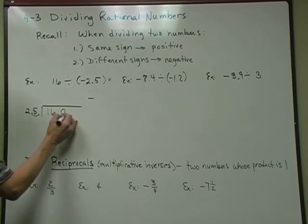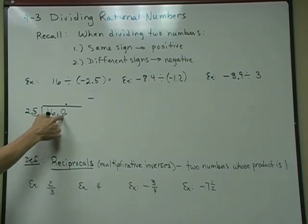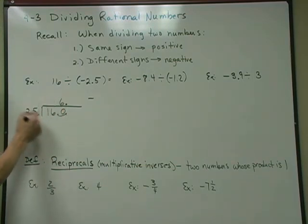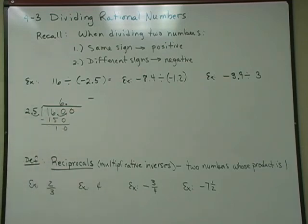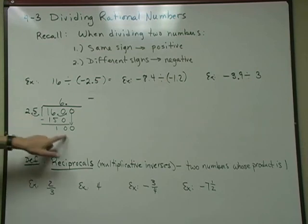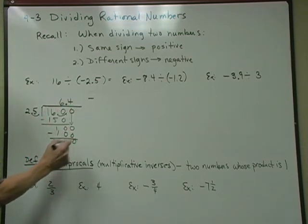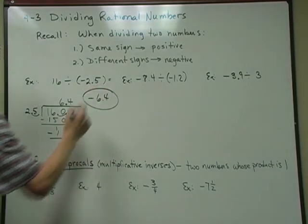I just had to add a decimal point and one zero to set this up. The decimal point comes straight up in the answer. 25 doesn't go into 1, doesn't go into 16, but goes into 160 six times — that's 150, subtract, 10 left over. I'll add a placeholder zero. 25 goes into 100 four times, nothing left over. My answer is 6.4. Remember, it was negative — so negative 6.4, or negative 6 and 4 tenths.